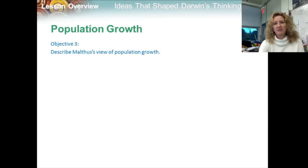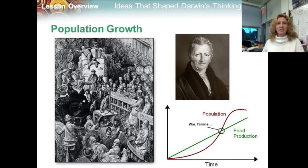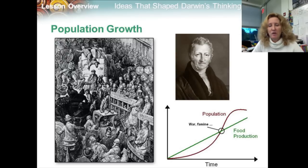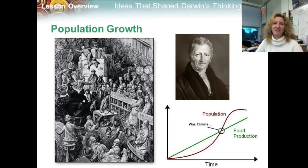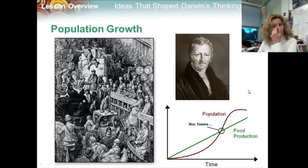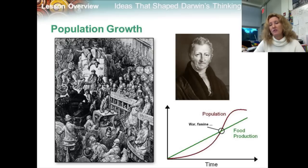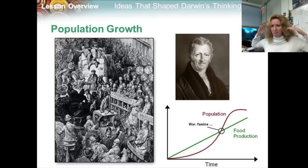Objective three: describe Malthus's view of population growth — gloom and doom, this guy. In 1798, English economist Thomas Malthus noted that humans were being born faster than people were dying, causing overcrowding in London. The forces that worked against population growth Malthus suggested included war, famine, and disease. He said that only war, famine, and disease would stop people from overpopulating.